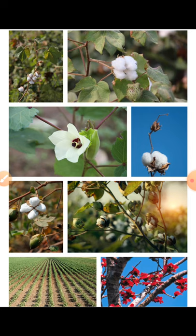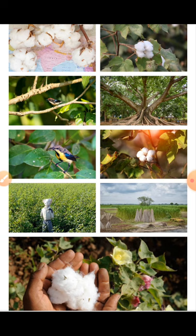The modest requirement of water can be met by an average rainfall of 50 to 100 cm. However, it is successfully grown in areas of lesser rainfall with the help of irrigation. About one third of the total area under cotton cultivation in India is irrigated.